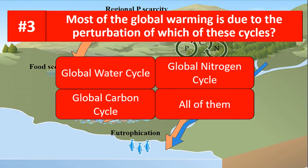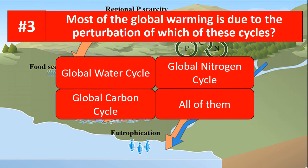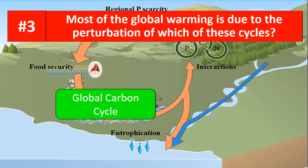Most of the global warming is due to the perturbation of which of these cycles? Is it the global water cycle, global nitrogen cycle, global carbon cycle, or all of them? The correct answer is the global carbon cycle.